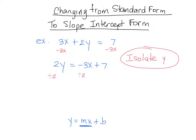Everything gets divided by 2 and we get y equals negative 3 over 2x plus 7 over 2. And now, we have our equation in slope intercept form where we can see easily here that the slope is negative 3 over 2 and the y intercept is equal to 7 over 2.